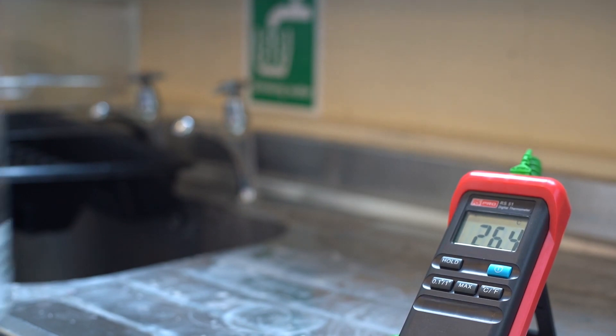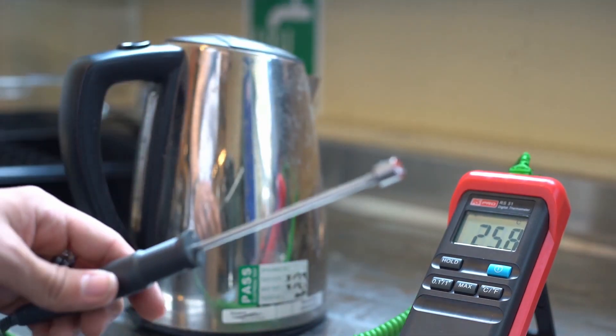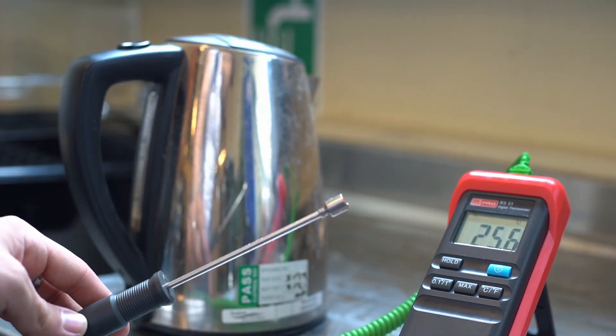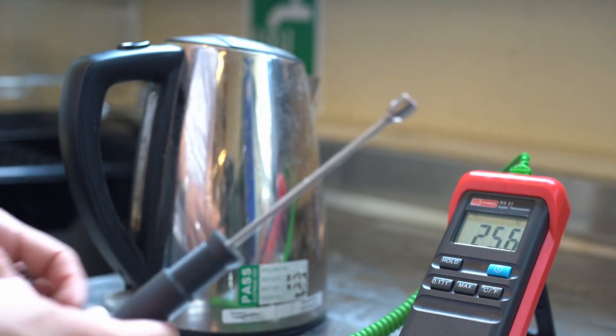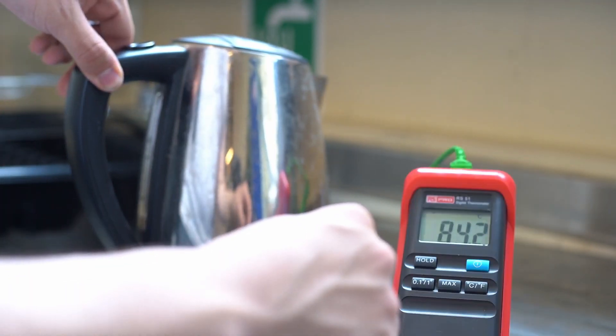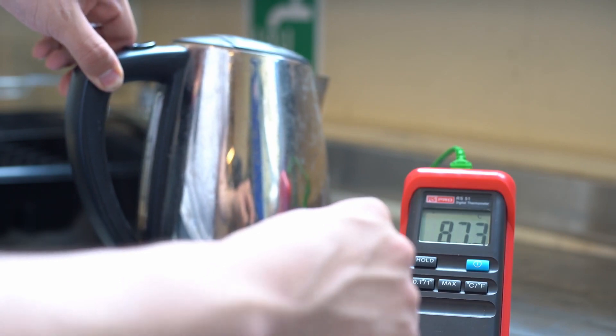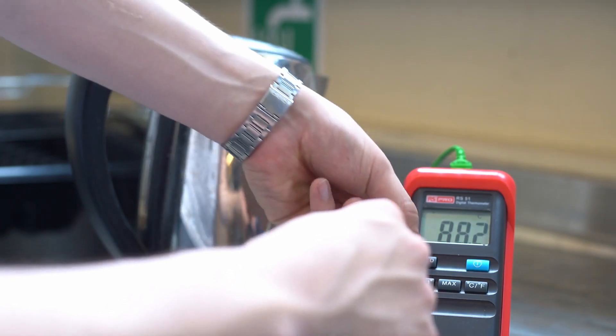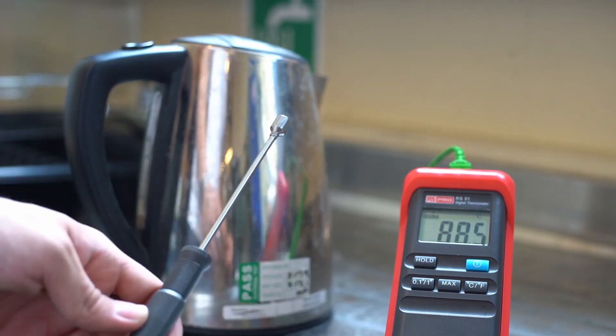Okay, so the kettle has now boiled and we can use the probe now with the protector taken off. It's a surface probe, we can actually touch the surface of the kettle and you can see the thermometer shows a reading of roughly 88, and if you wanted to, we could hold it there so we can take a note of the reading.